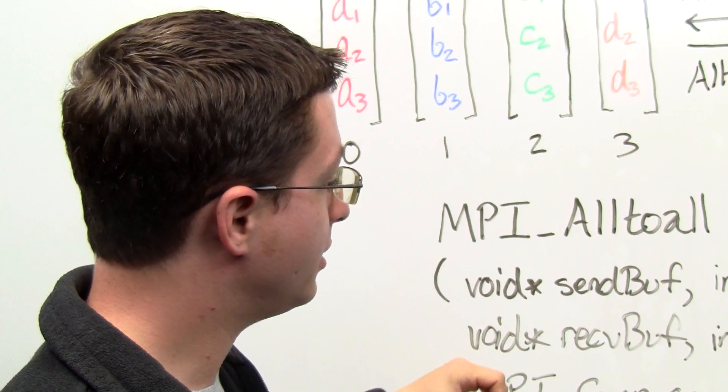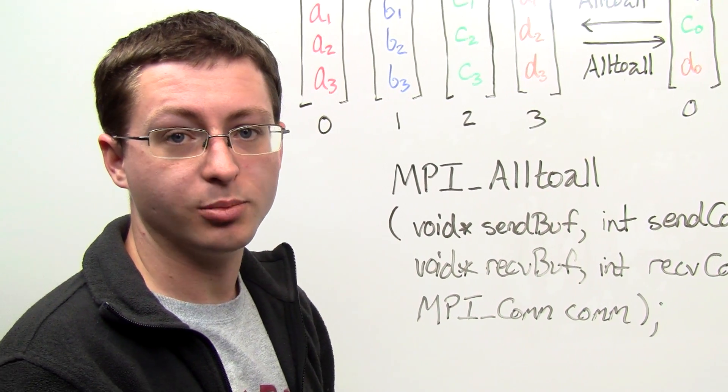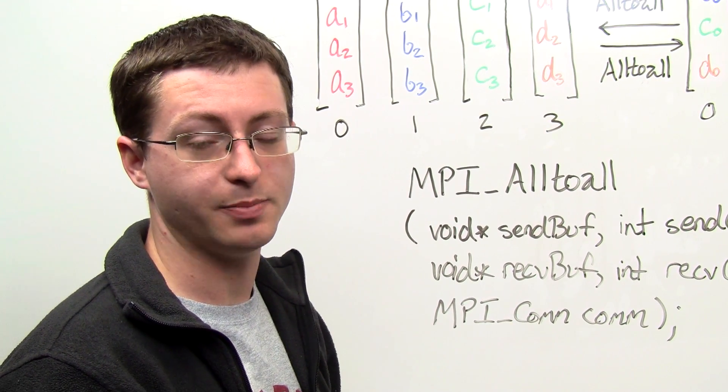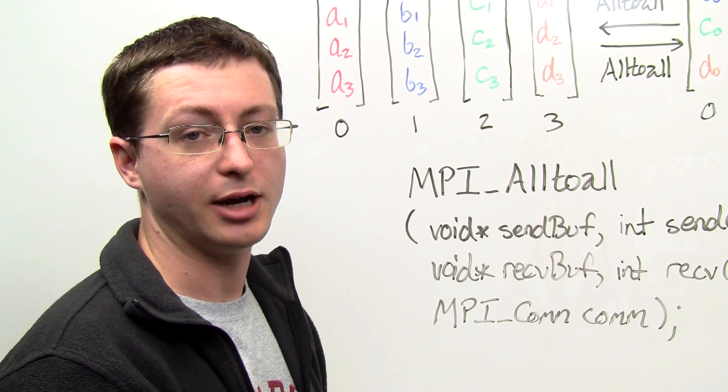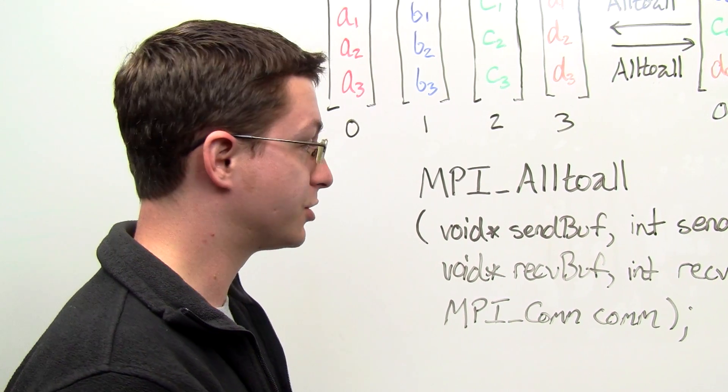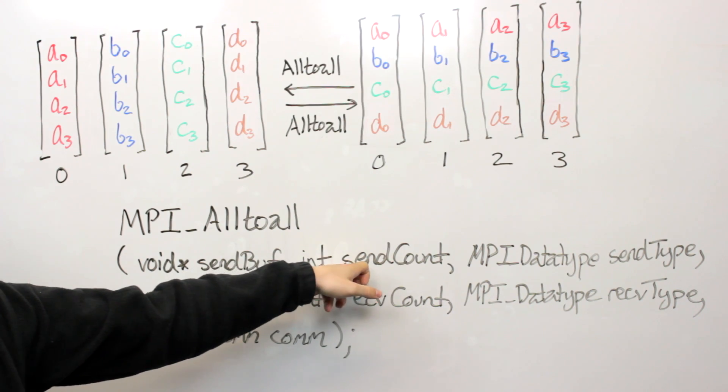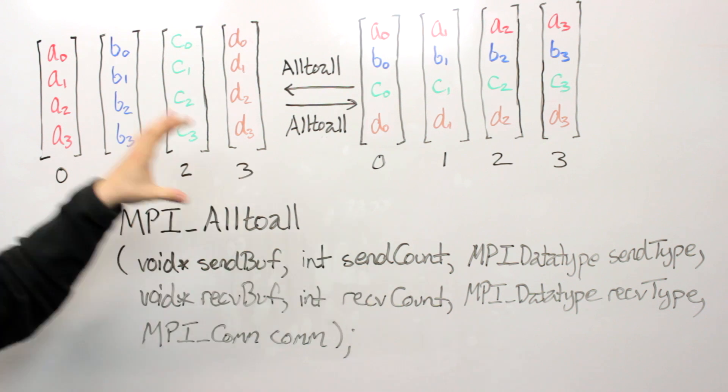Okay, so the set of arguments to MPI all-to-all are pretty simple and probably what you expect if you've seen other MPI routines. The main thing that's a little tricky is the send count argument. Now if, for instance,